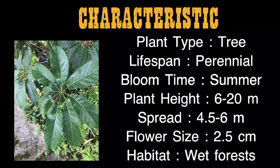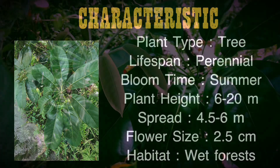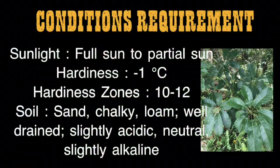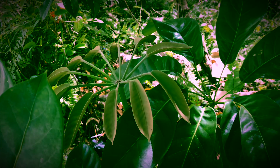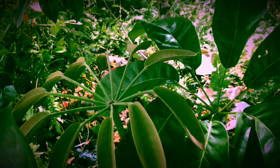Characteristics: Plant type — tree. Lifespan — perennial. Bloom time — summer. Plant height — 6 to 20 meters. Spread — 4.5 to 6 meters. Flower size — 2.5 centimeters. Habitat — wet forests. Conditions: sunlight — full sun to partial sun. Hardiness — minus 1. Hardiness zones 10 to 12. Soil — sand, chalky loam, well-drained, slightly acidic to neutral to slightly alkaline.